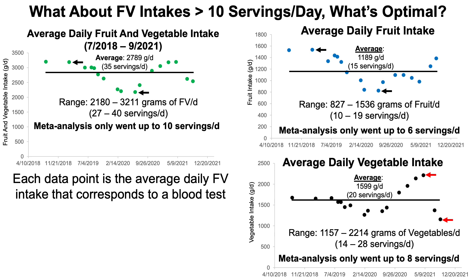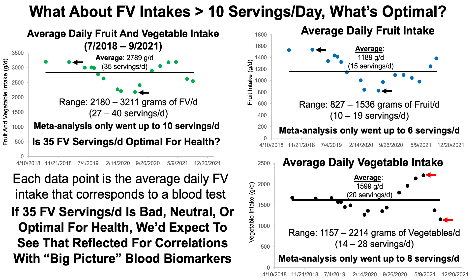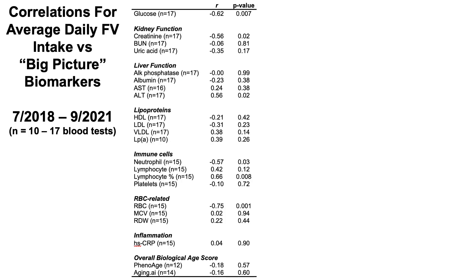So is 35 servings of fruits and vegetables per day optimal for health? To address that, each data point is the average fruit and vegetable intake corresponding to a blood test. If this amount is bad, neutral, or optimal for health, we'd expect that to be reflected in correlations with big picture blood biomarkers. That's what we're going to get into here — correlations for my average daily fruit and vegetable intake versus the big picture biomarkers.